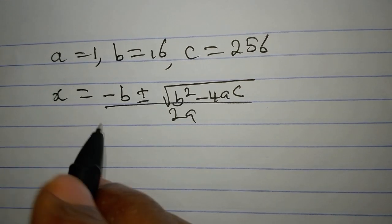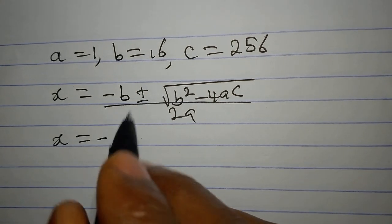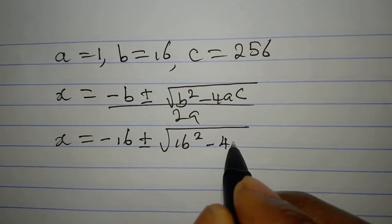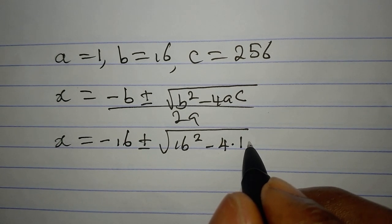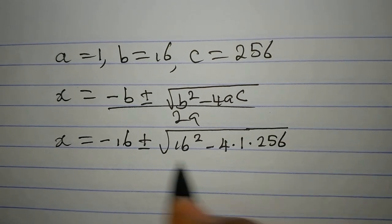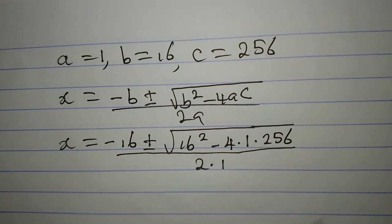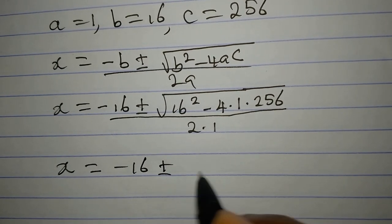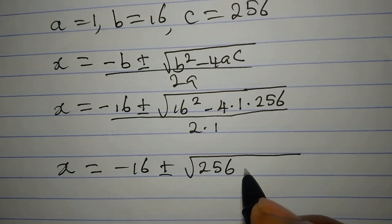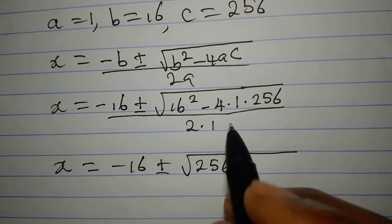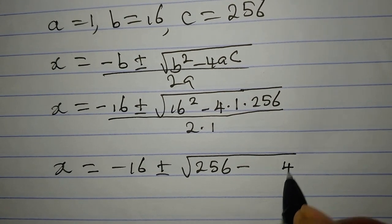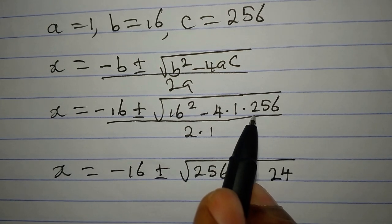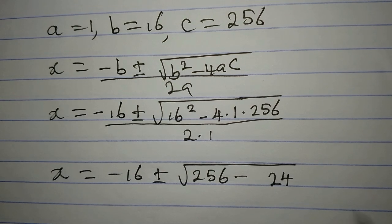Using the quadratic formula, x equals negative b, which is negative 16, plus or minus the square root of b squared minus 4ac, all divided by 2 times a. So x equals negative 16 plus or minus the square root of 256 minus 4 times 256, divided by 2. That gives us 256 minus 1024 under the square root.